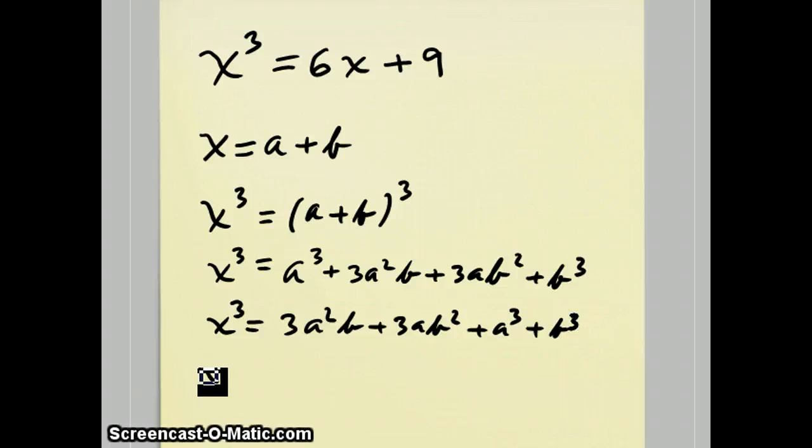This doesn't look like anything special. And here it comes. We can factor out a 3ab from these first two terms, a plus b. Leave the second two terms alone.